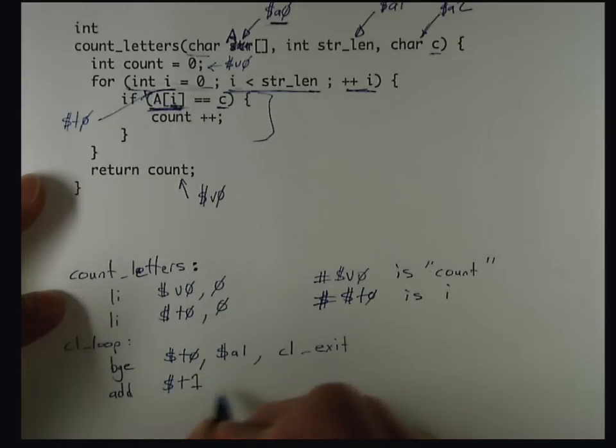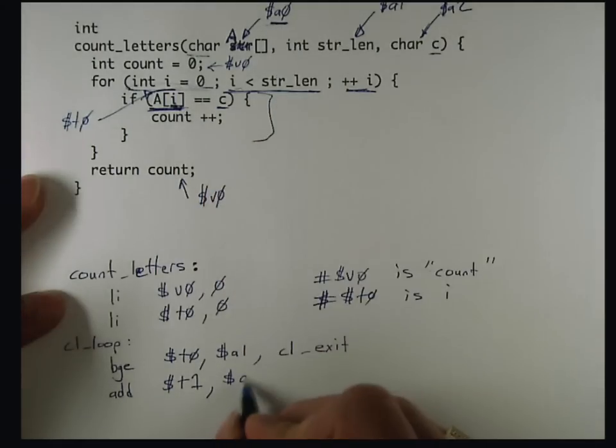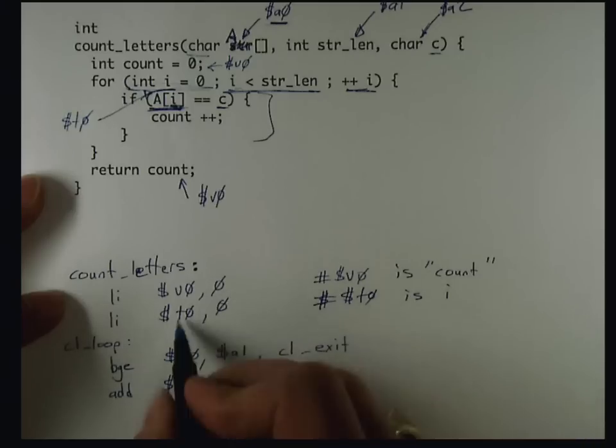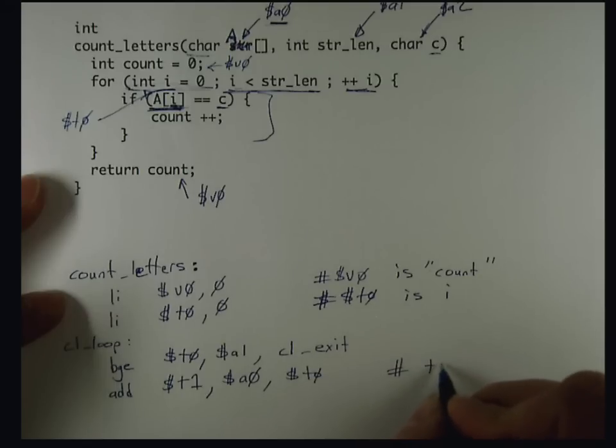That's pretty easy. I can generate a temporary for the address of the I-th character. I'm going to use the next T register, T1, by adding the base of the array, A0, to I, which is in T0. So T1 is the address of the I-th character.